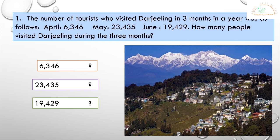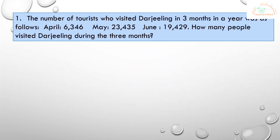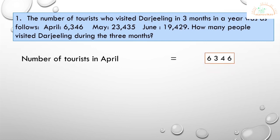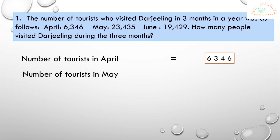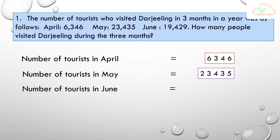The answer to these questions will help us form the statements for the solution. We have to write the statements to the left side and the numbers to the right side of your book. The first statement: number of tourists in April is equal to 6,346. Leave sufficient space between the numbers so that addition becomes easier. Second statement: number of tourists in May is equal to 23,435.